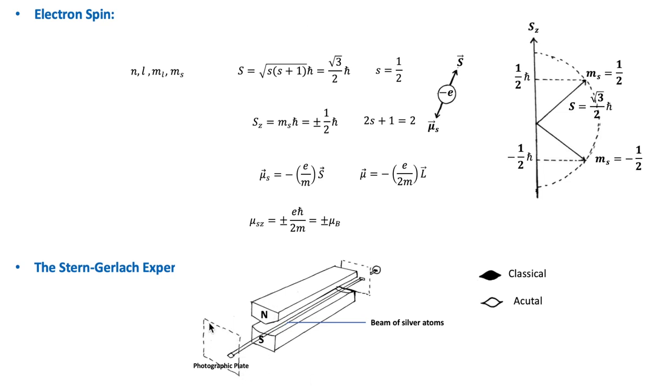Then, a photographic plate would record the shape of the beam after it had passed through the magnetic field and deflected as a result.